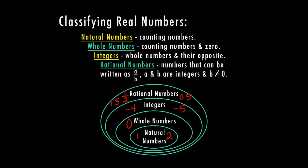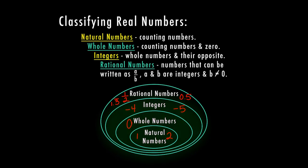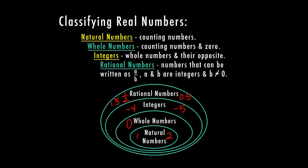We do have to address that natural numbers, whole numbers, and integers are also all included as rational numbers. If you don't remember how to write a whole number as a fraction, we would just take our whole number — I'm going to use the number three — and put it over the denominator of one. That turns it into a rational number in fraction form, but it still equals the same amount, three. I could do the same thing with a negative: take negative three and put it over a denominator of one. So again, all numbers inside the circle — natural numbers, whole numbers, integers, and rational numbers — are all considered rational numbers.